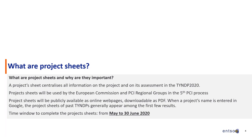They will be downloadable as PDF and also published on the internet for everyone to see. When anyone enters your project name in Google, it is likely that among the first few links they will find the project sheets of your project in this TYNDP, the previous ones and the next ones. The deadline we've set to provide information is the end of June. The information we ask for is really nothing complicated — this information you already have, mostly. Should you be missing information and think you might have it later than end of June, please let us know, as it could still be possible to add information later.